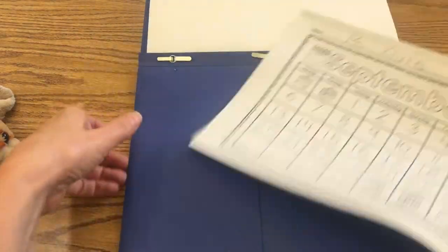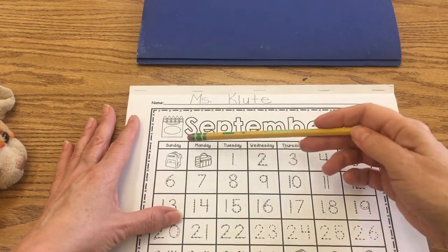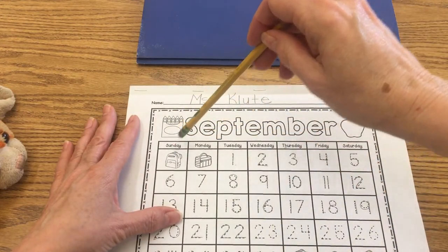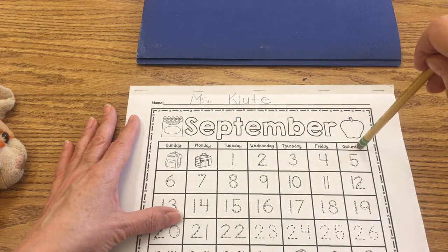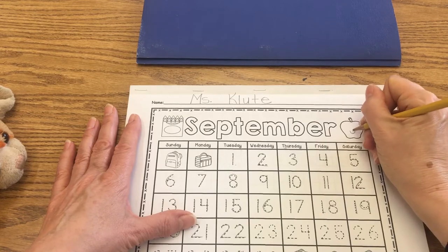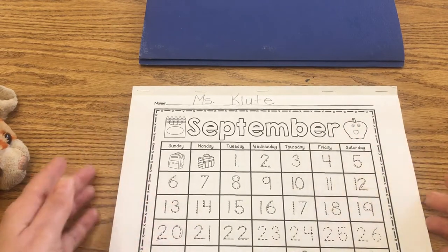And then we're going to pull out our calendar for the month of September, and you'll see across the top our Days of the Week. You can read them with me. Sunday, Monday, Tuesday, Wednesday, Thursday, Friday, Saturday. A happy apple is not a day. That kind of goes with that song. So there's my happy apple.